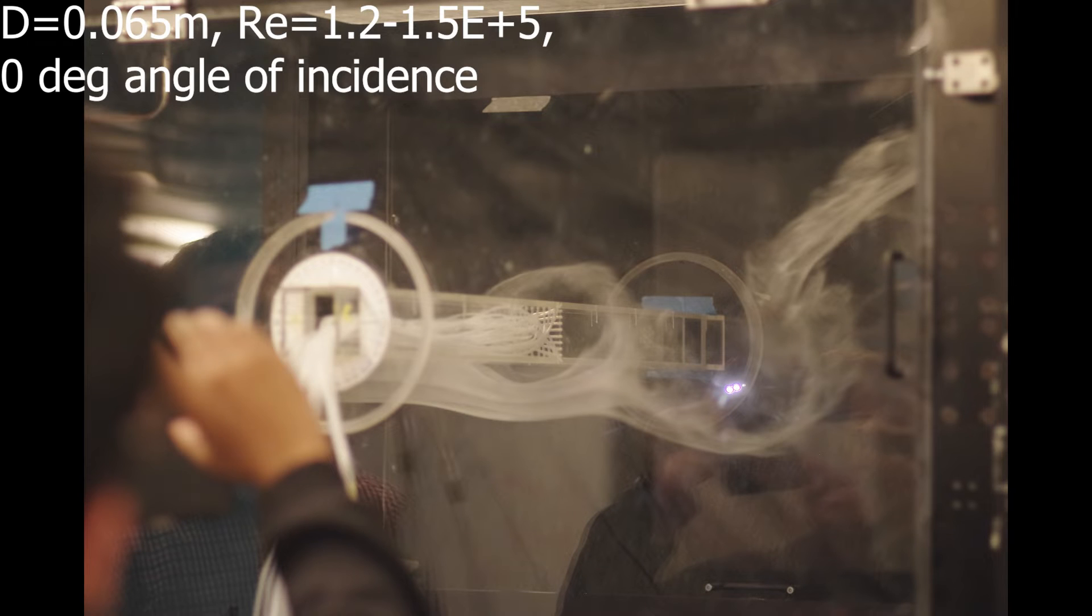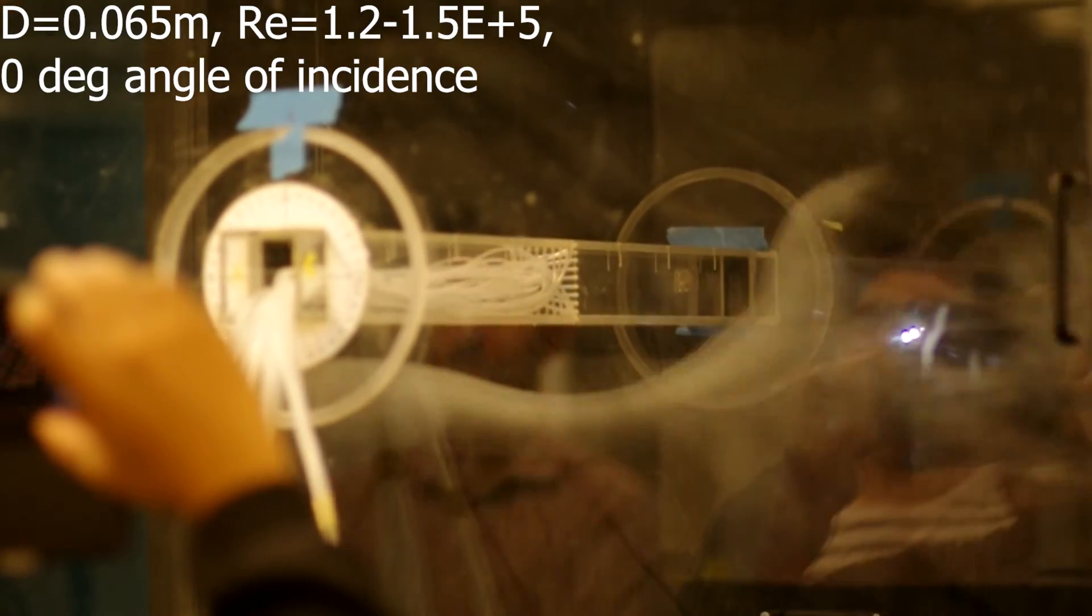First, let's look at the situation with zero angle of incidence. This first photograph, this first movie, illustrates the flow around the cylinder and the vortex shedding in the wake of the cylinder. The flow direction is from left to right. And the smoke interferes with the vortex shedding in the wake of the cylinder. Some intense turbulent mixing and dispersion occurs, as illustrated on this movie.